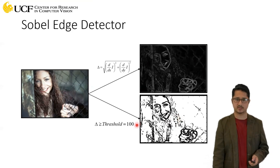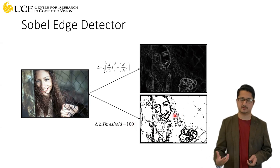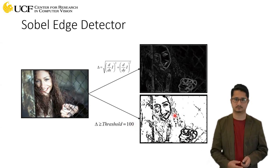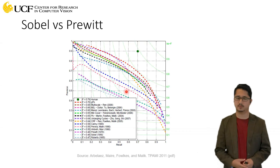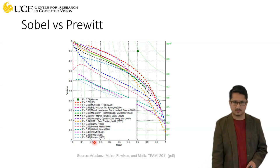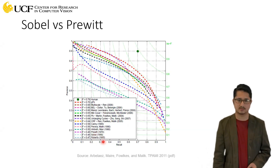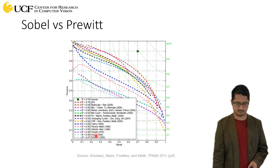Changing the threshold affects the output: lowering the threshold gives more detected edges, while increasing it reduces the number of detected edges. Looking at a performance plot used to evaluate edge detection algorithms, the green dot represents human performance. Sobel and Prewitt perform almost identically — around 0.48 F-measure — which we briefly covered in the last lecture as well.